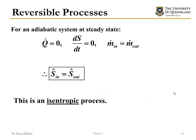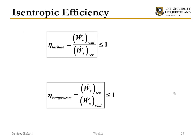If we look at an adiabatic system at steady state that's reversible, we've lost the generation term and the heat term, and it's not changing with time. We get the result that entropy into our process equals entropy out of our process. This is what we mean by an isentropic process — entropy in equals entropy out. The beauty of an isentropic process is that this is the best we can do: the most efficient process we can have. All real processes actually have some entropy generation term in them.